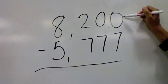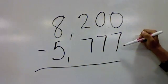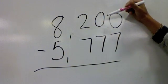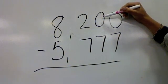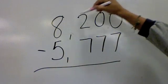Zero minus seven, you can't do it. Your neighbor's a zero, you still can't do it. But you have a two here.